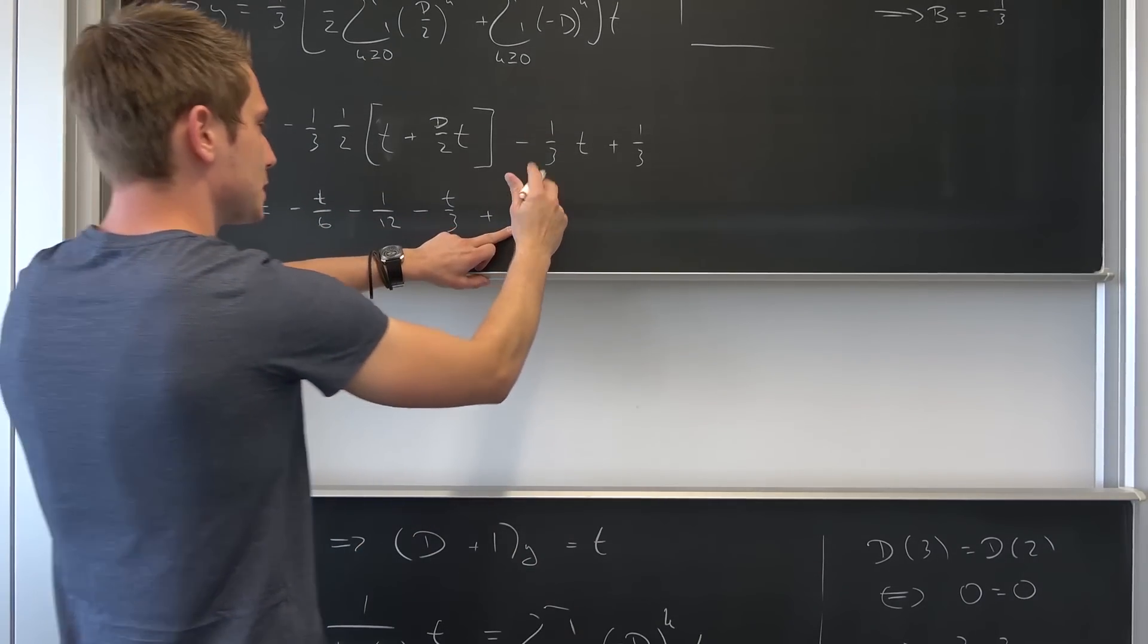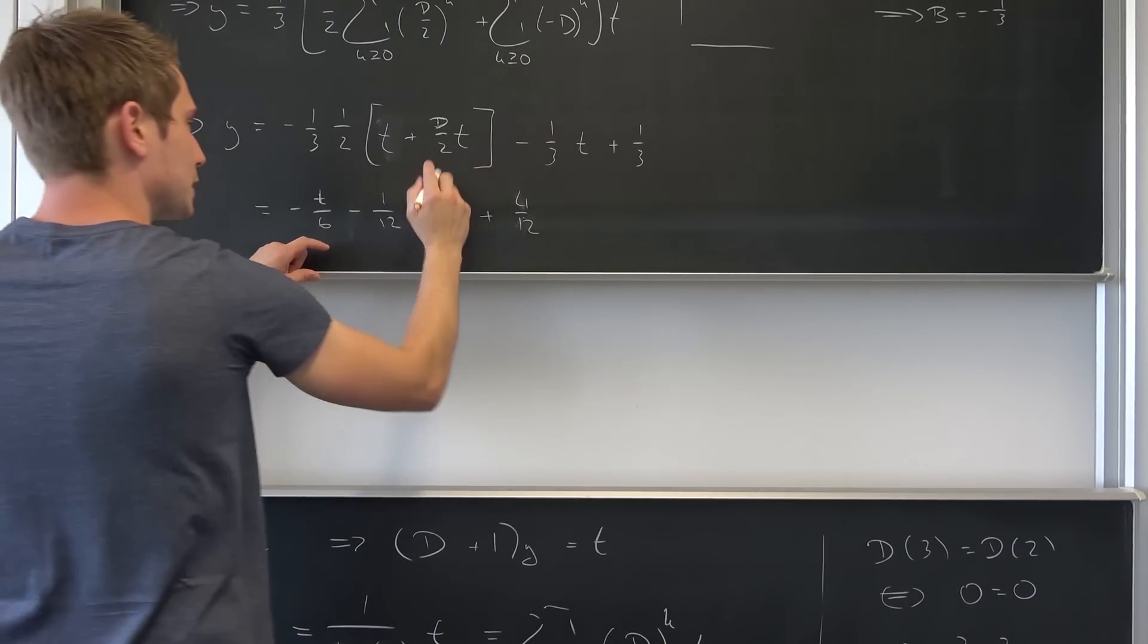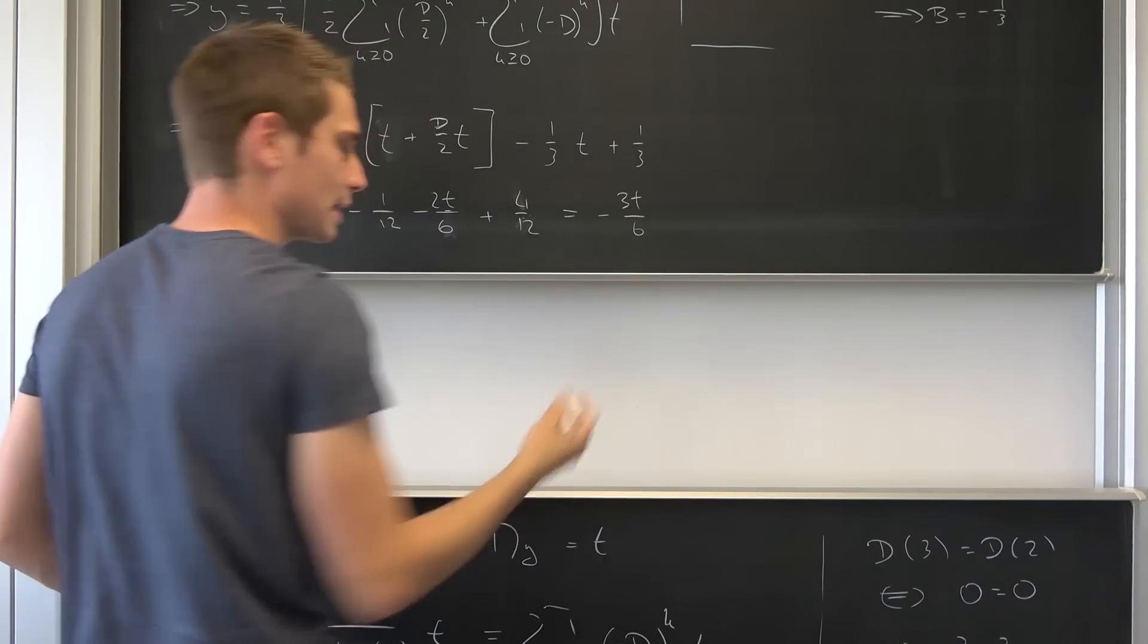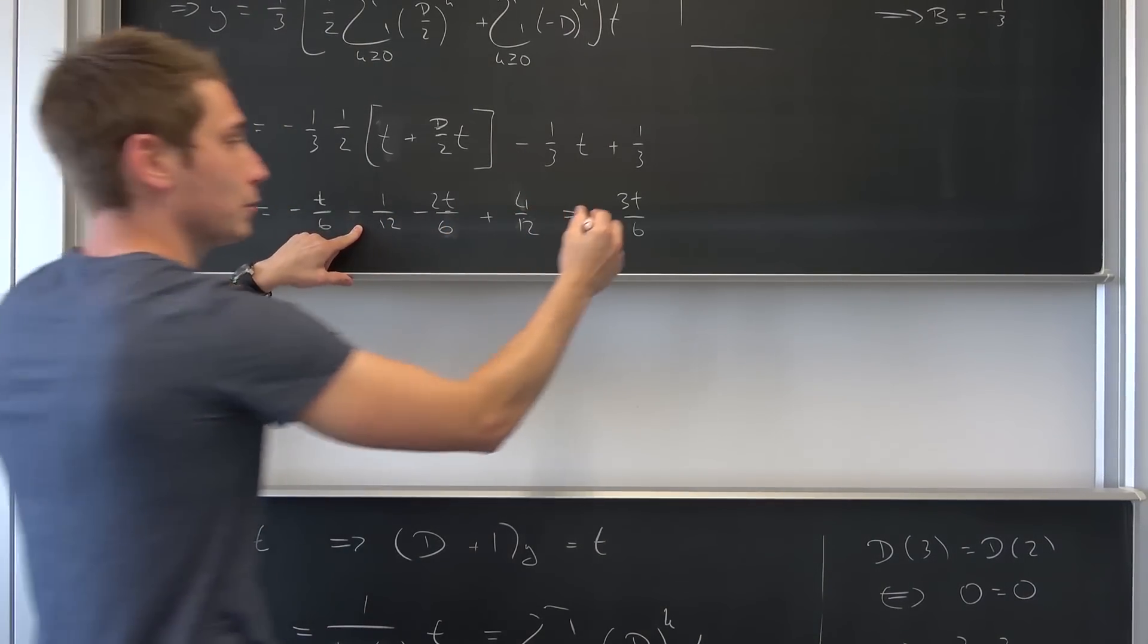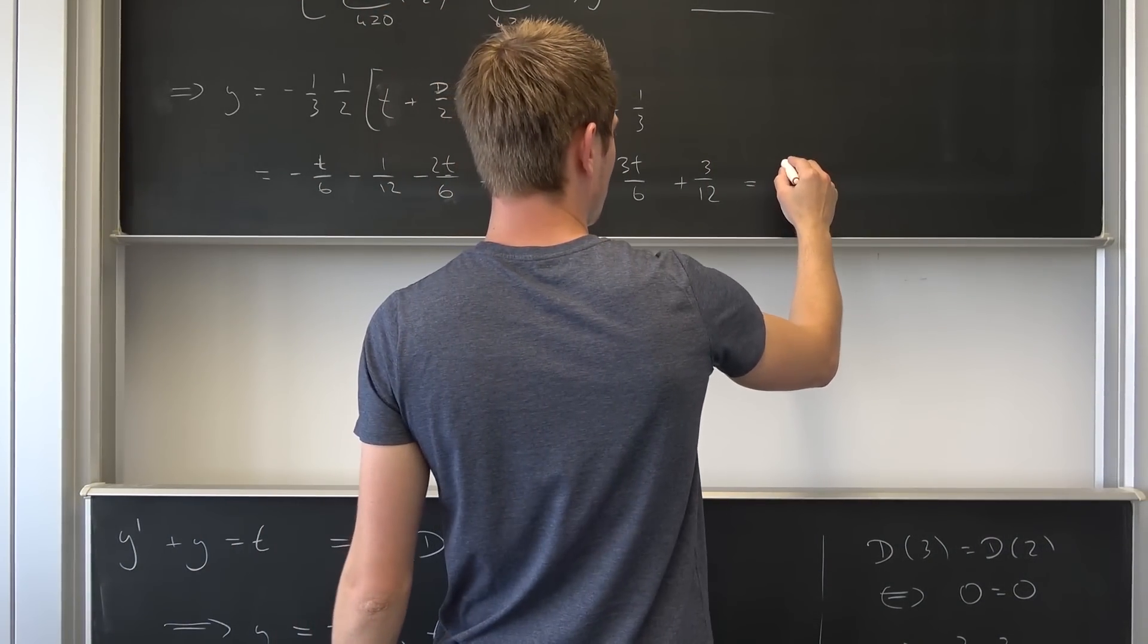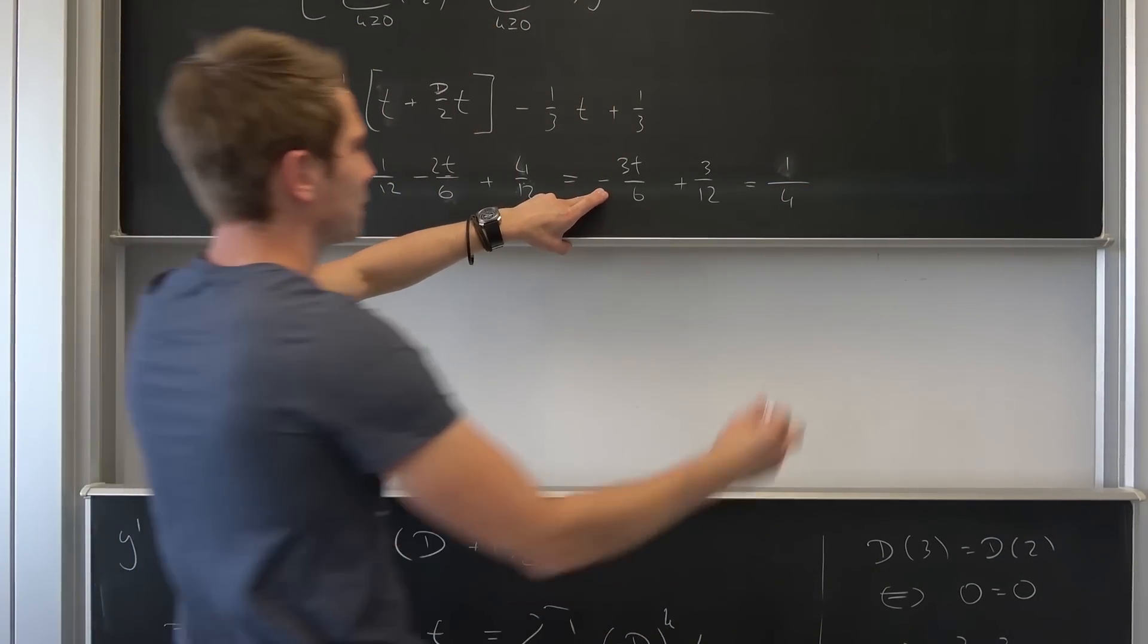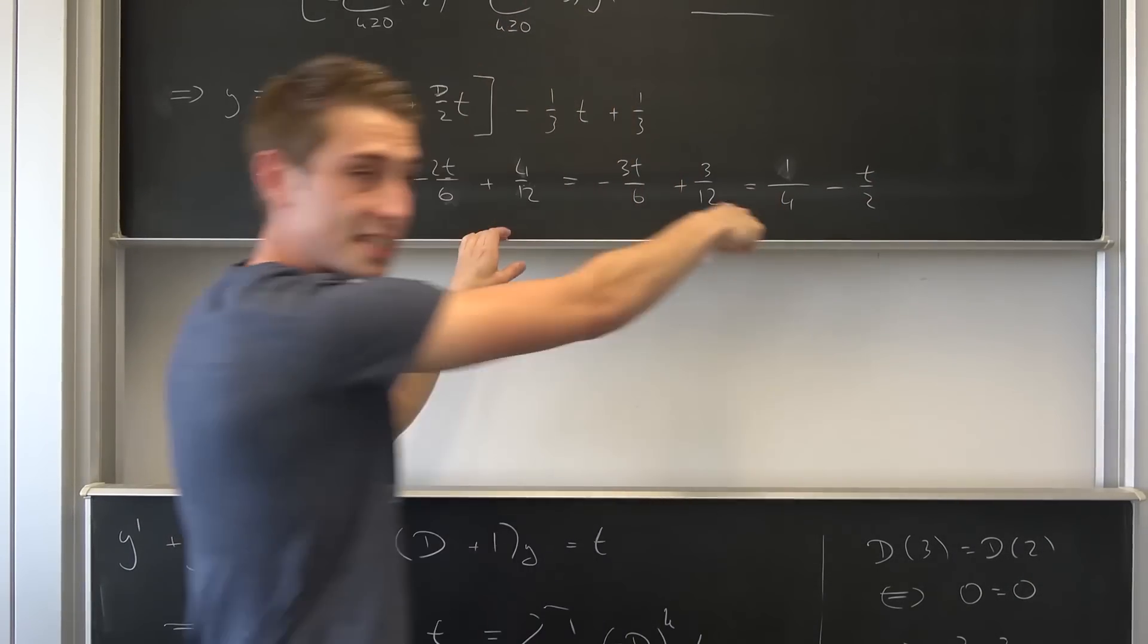I hope this is going to work out. One third is nothing but four over twelve, leaving us with, okay, this thing right here is two t over six, so this is negative three t over six. I'm going to shorten those expressions in a second. And here we are going to get plus three over twelve, leaving us overall with four, no one, one quarter I'm terribly sorry, and then with a negative t over two, right? Yeah.